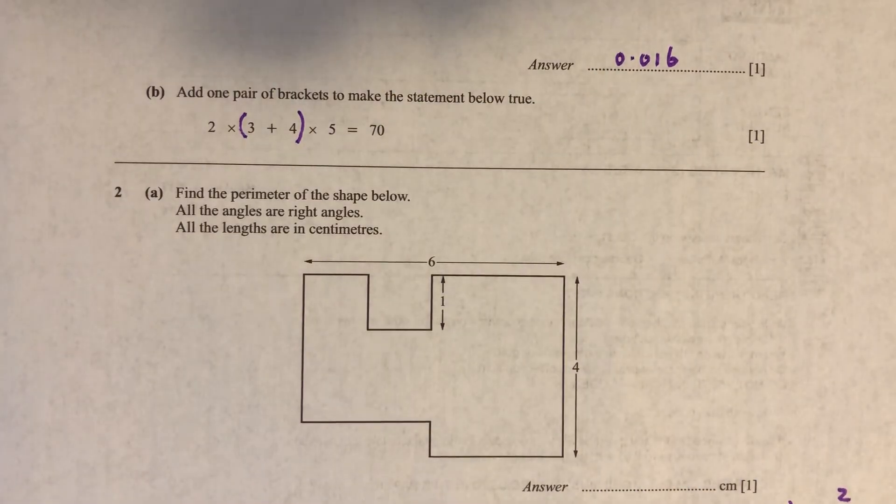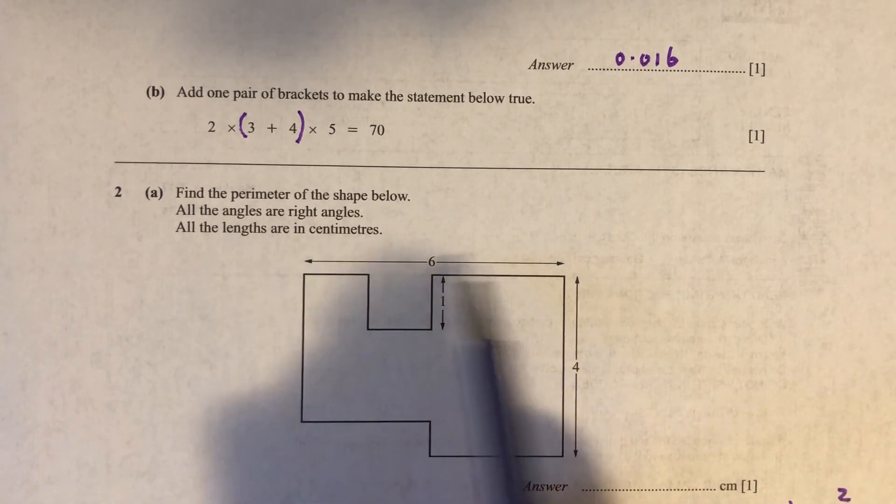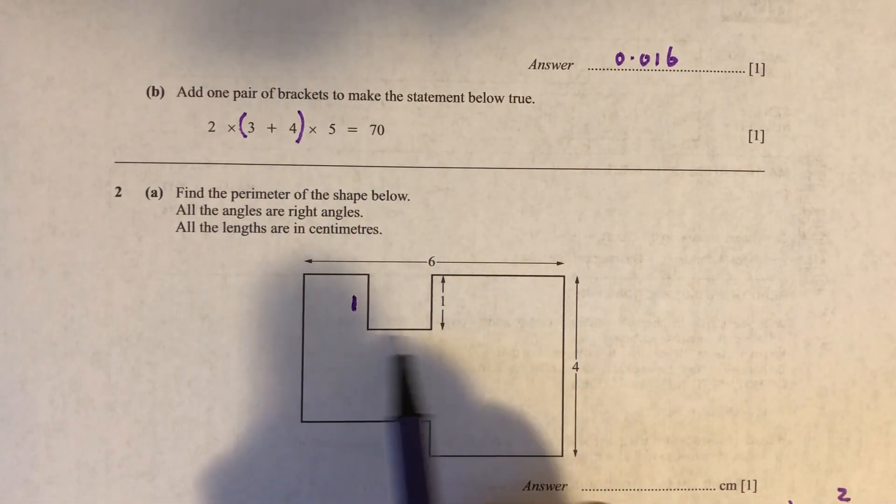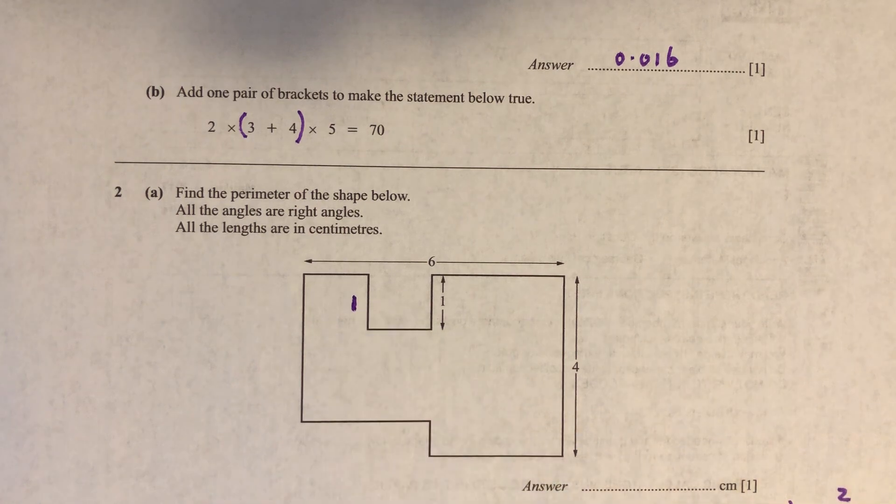So question number 2. Find the perimeter of the shape below. All the angles are right angles and all the lengths are in centimeters. So we can see this is 6 and this is 4 centimeters. And this is 1, which means this is also 1. So this we don't know and this we don't know. So what we can do is we can use a trick.